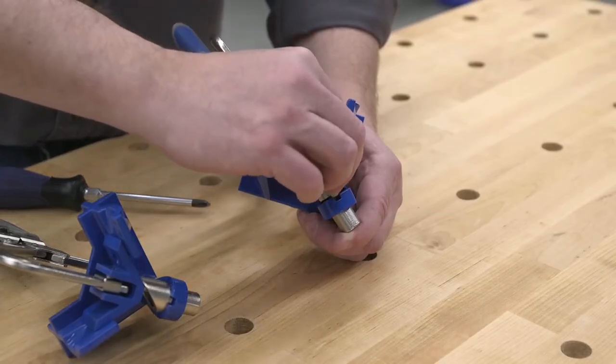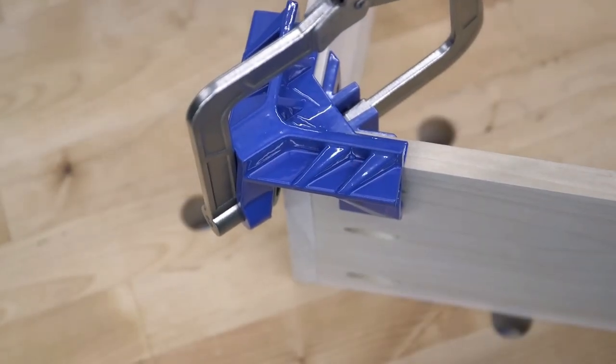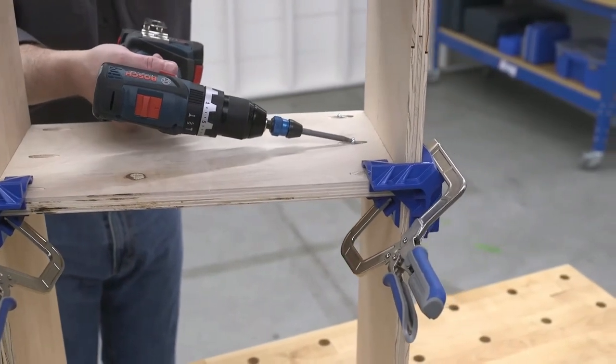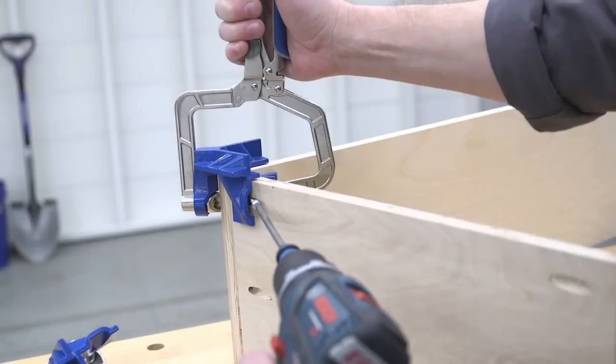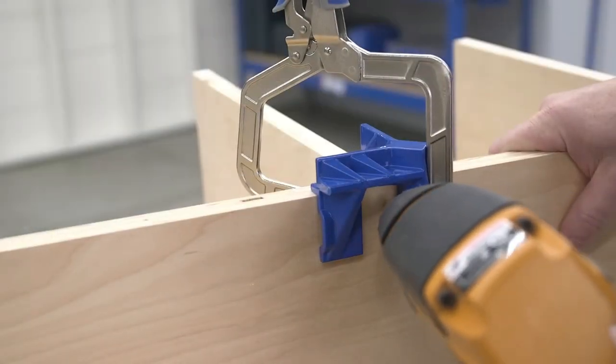This handy clamp ensures that the pieces sit at 90 degree angles to ensure that you'll get great results. The 90 degree corner clamp also simplifies T-joints that are commonly used to attach shelves and partitions.